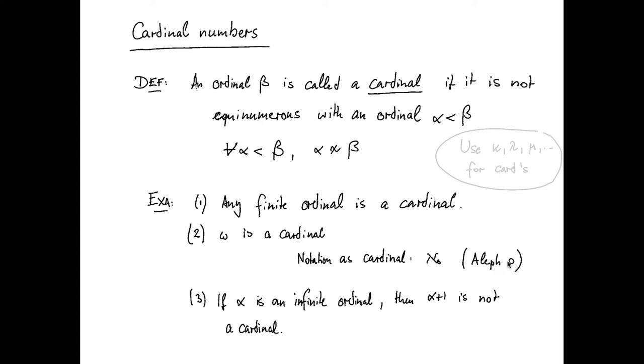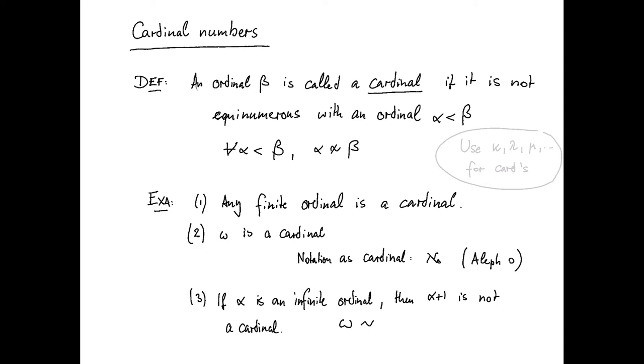Finally, we observe that if alpha is an infinite ordinal, then alpha plus one is not a cardinal. The reason for that is similar to what we saw before, namely when we observed that omega can be mapped bijectively to omega plus one. Similarly, if alpha is an infinite ordinal, it can always be mapped bijectively to alpha plus one, so alpha plus one cannot be a cardinal because there is an equinumerous ordinal smaller than it.